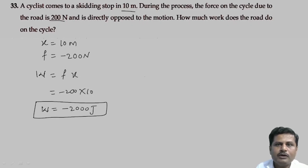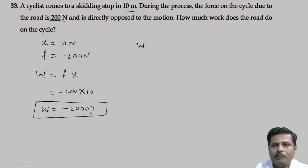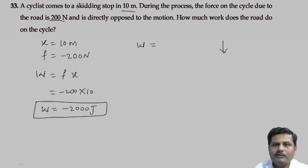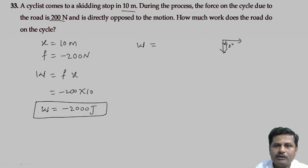Suppose they ask you to find the work done by the bicycle on the road. The force exerted by the bicycle is its weight, acting in the downward direction, whereas the displacement is horizontal. The angle between displacement and the weight of the bicycle is 90 degrees. So work done by the bicycle on the road is 0, whereas work done by the road on the bicycle is minus 2000 Joule.